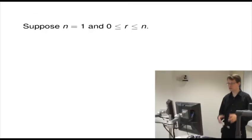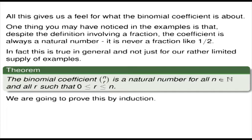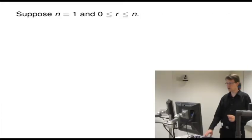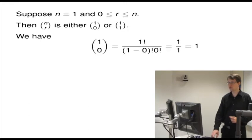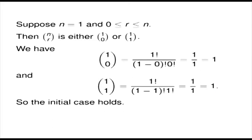We're going to prove this using induction. Let's do the initial case: suppose n equals 1, and r is between 0 and n. So r could be 0 or 1 — there are two things to check. 1 choose 0 gives 1, and 1 choose 1 also gives 1. So the binomial coefficient is always a natural number in this case, and the initial case holds.